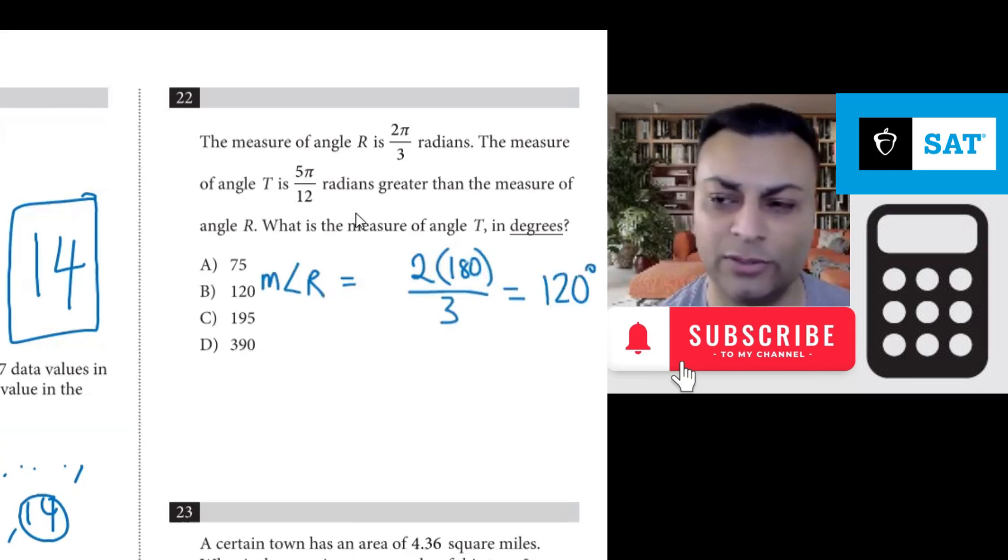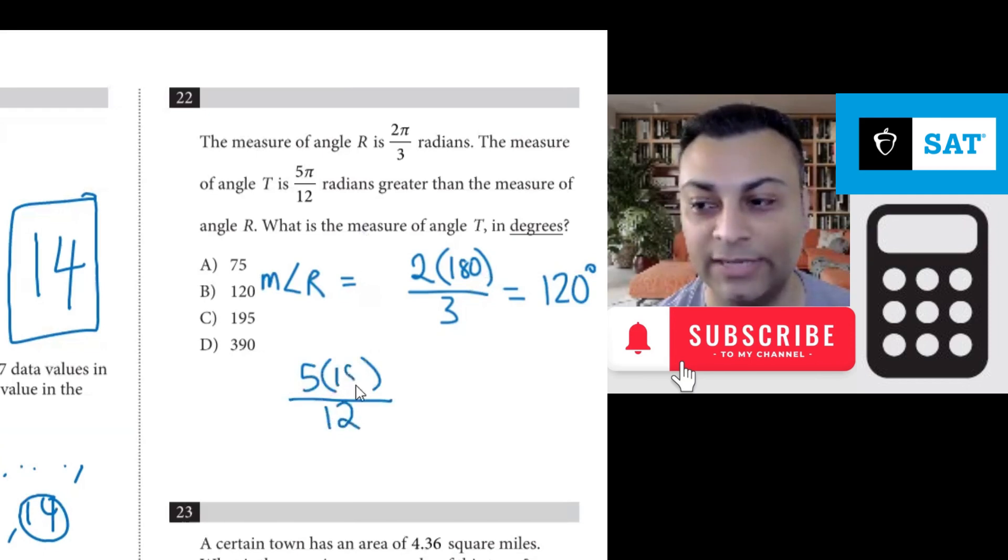Okay. And let's do angle t. It's 5π/12 greater. Well, what is 5π/12? Let's convert that to degrees as well. So 5π/12. And once again, π is 180 degrees. You can put a degree symbol there, but 180 is what we need.